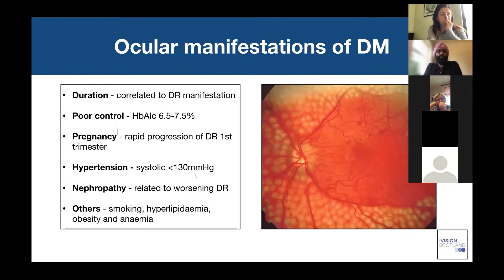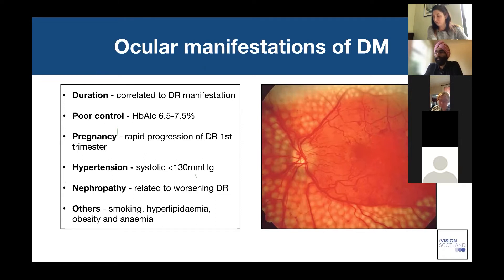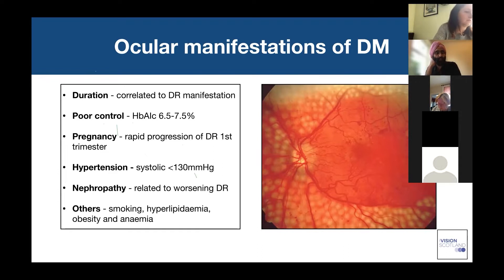What defines whether a patient will present with diabetic retinopathy and how aggressive it will be? One important correlation is duration — the longer a patient has been diagnosed with diabetes, the more likely they are to present with diabetic retinopathy changes. Poor blood sugar control is also correlated with worsening diabetic retinopathy presentation and progression.